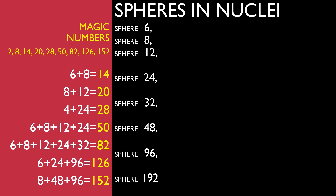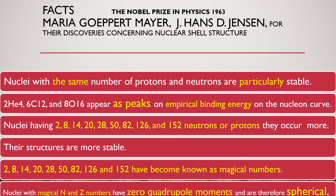Nuclear shell structure: the nucleus with magic numbers is composed of a group of nuclear spheres or shells. Nuclei with magic numbers have zero quadrupole moments and are spherical.